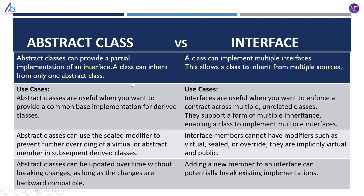A class can inherit from only one abstract class. In the case of interfaces, a class can implement multiple interfaces, which allows a class to inherit behavior from multiple sources.